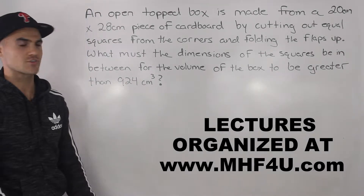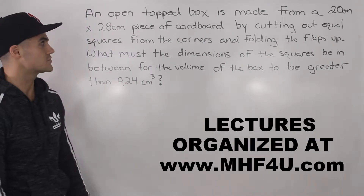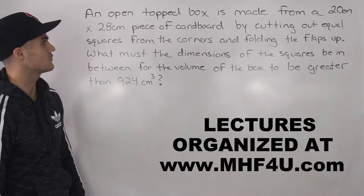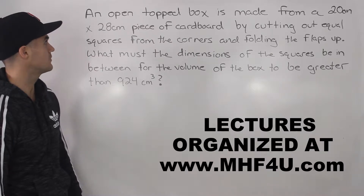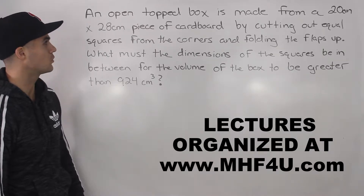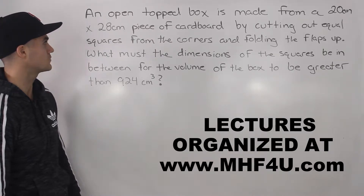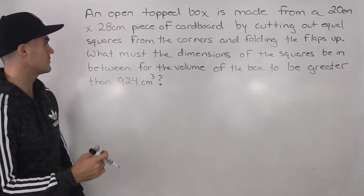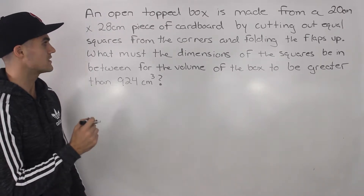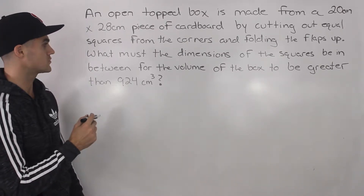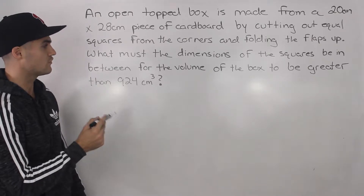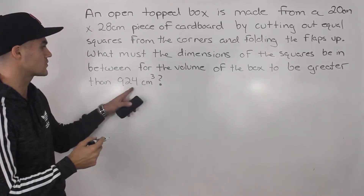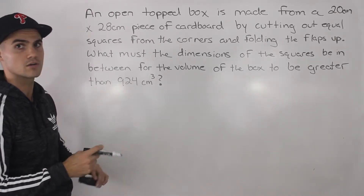What's up everybody, welcome back. Patrick here, moving on to another question. An open top box is made from a 20 centimeter by 28 centimeter piece of cardboard by cutting out equal squares from the corners and folding the flaps up. What must the dimensions of the squares be in between for the volume of the box to be greater than 924 centimeters cubed?